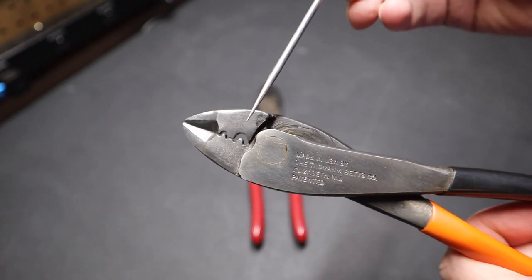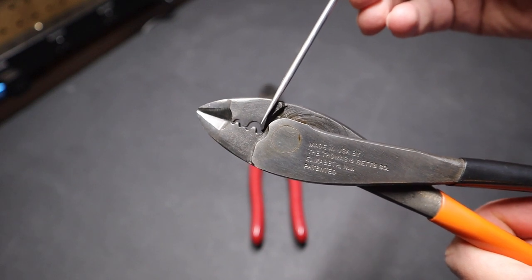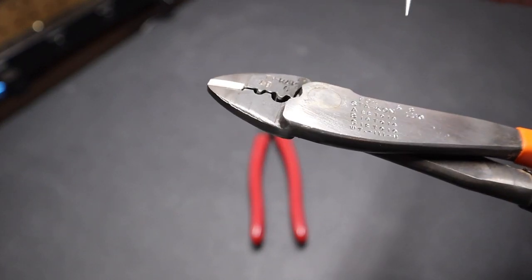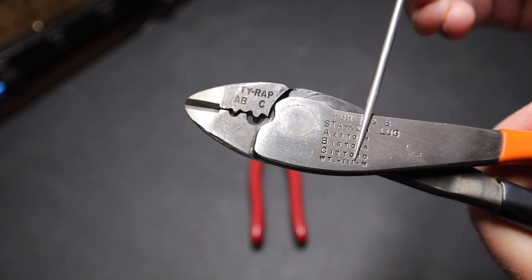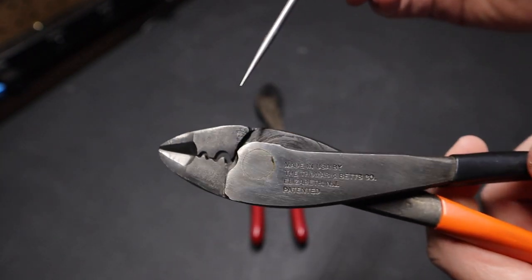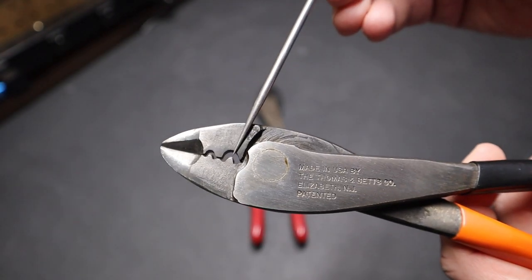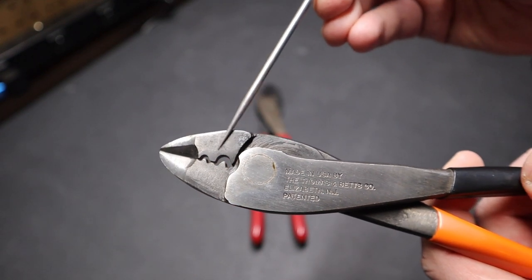If you notice on these crimpers, they offer a couple options at least, but on this particular model number, which I think we can see right here, it's a little bit hard to see, but you can see it's the WT111-M. And I'll have a link to it in the description. But for this particular crimper, you'll notice that they have the same part here in the tool, the non-insulated part of the die in two different locations, two different sizes.